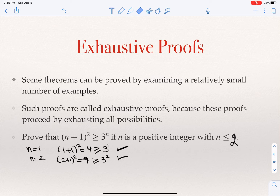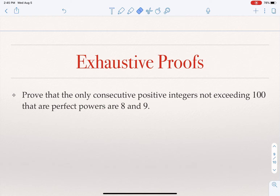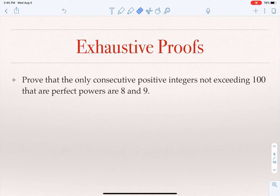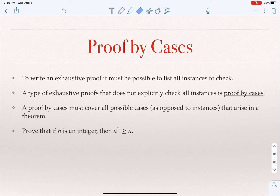So if I'm trying to prove (n+1)² ≥ 3ⁿ for every positive integer n ≤ 2, there are only two such integers and I can just evaluate it for these two. Another example: prove that the only consecutive positive integers not exceeding 100 that are perfect powers are 8 and 9. Eight is 2³ and nine is 3². You can look at every possible perfect power between 1 and 100 and find that these are the only two consecutive ones.